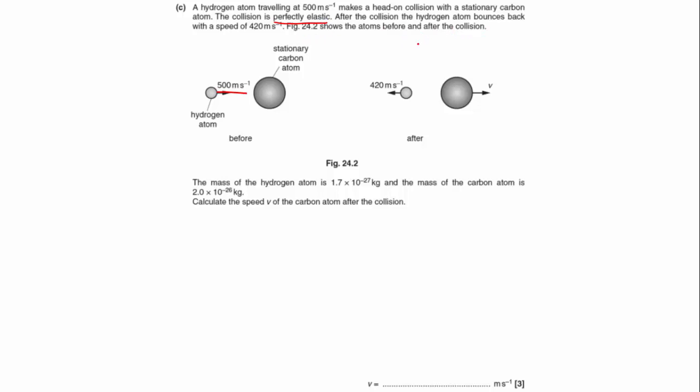After the collision, the hydrogen atom bounces back with a speed of 420 meters per second. Figure 24.2 shows the atoms before and after the collision. The mass of the hydrogen atom is 1.7 times 10 to the minus 27 kilograms, and the mass of the carbon atom is 2 times 10 to the minus 26. We've got to calculate the speed v of the carbon atom after the collision.